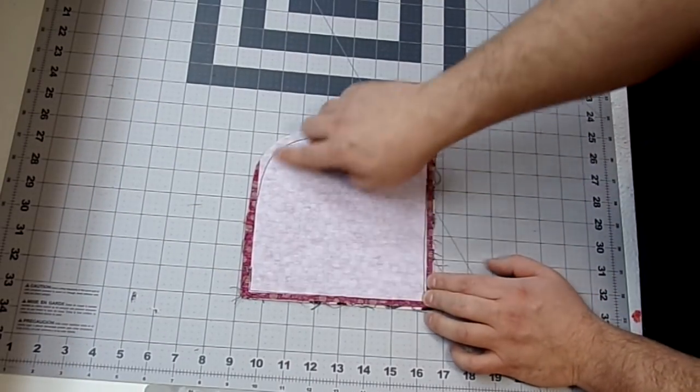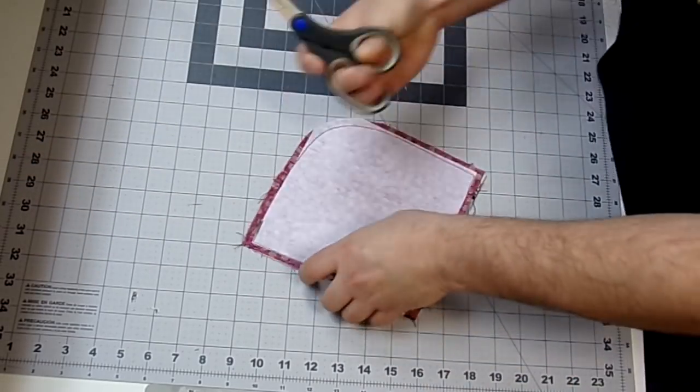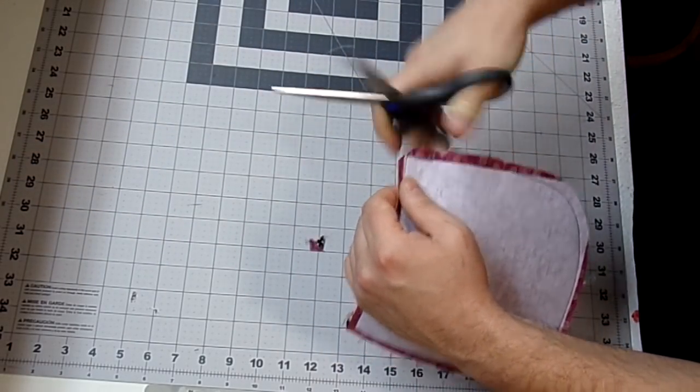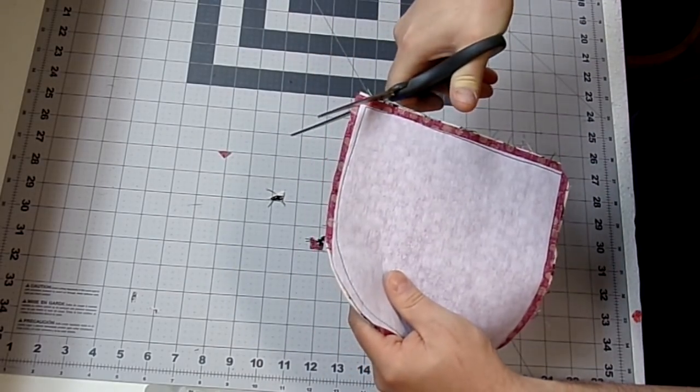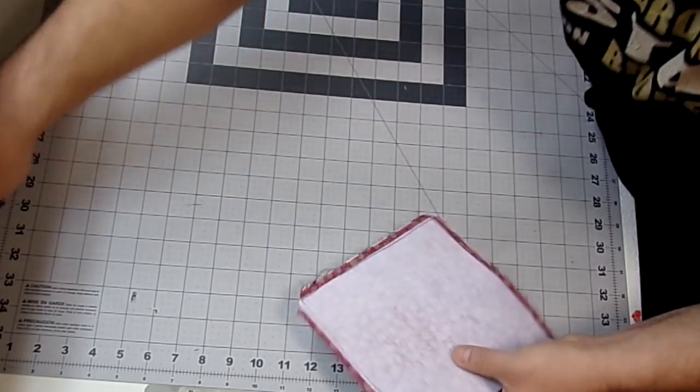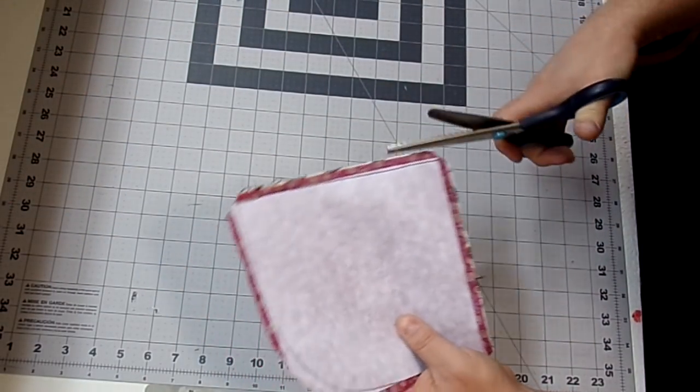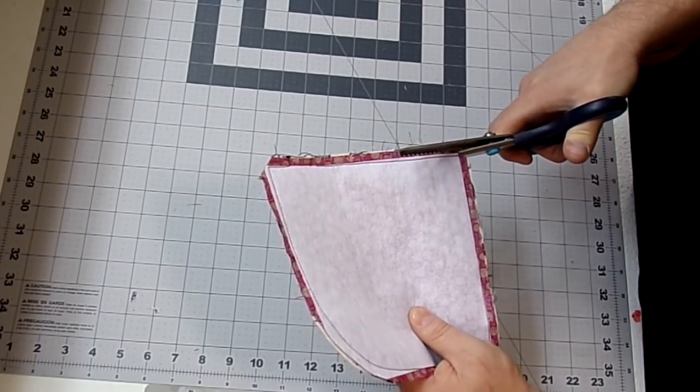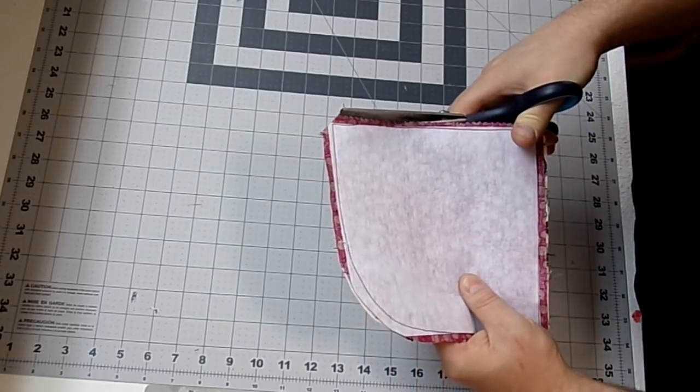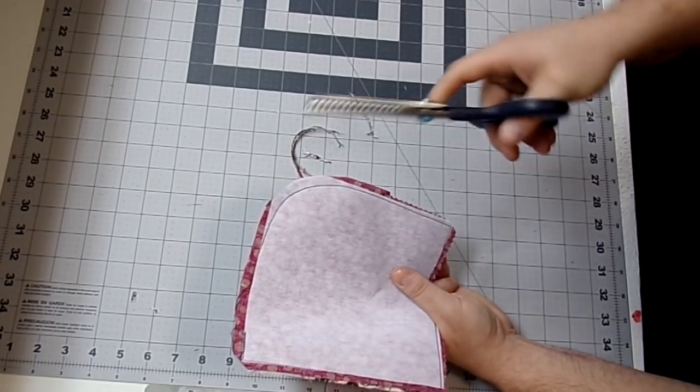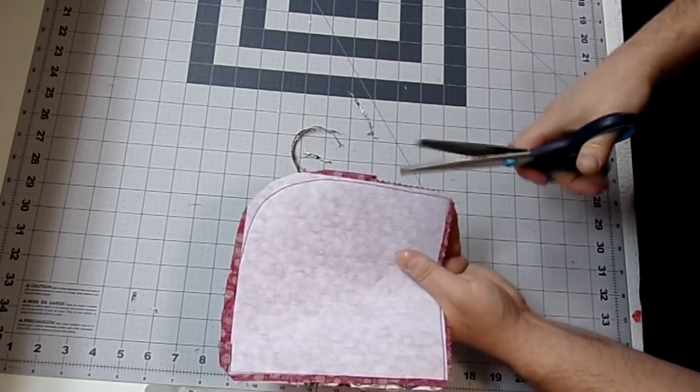All right guys, so now that I sewed all the way around with a quarter inch seam allowance, leaving this open. With my fabric scissors, I'm going to clip the corners. And this step is optional, but now I'm going to take my pinking shears and I'm going to pink around the sides. If you don't have pinking shears, you definitely want to go around this corner part and make little notches. That way it just lays a lot flatter.